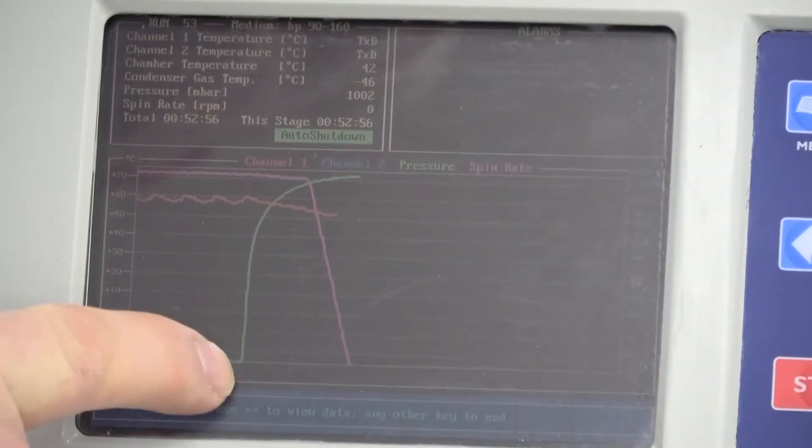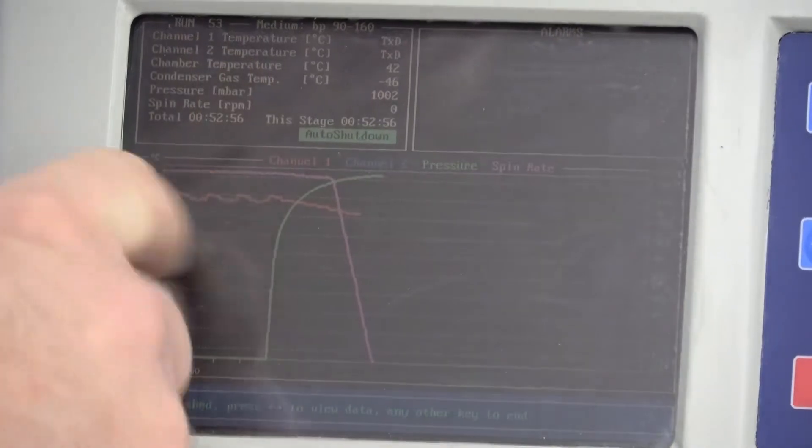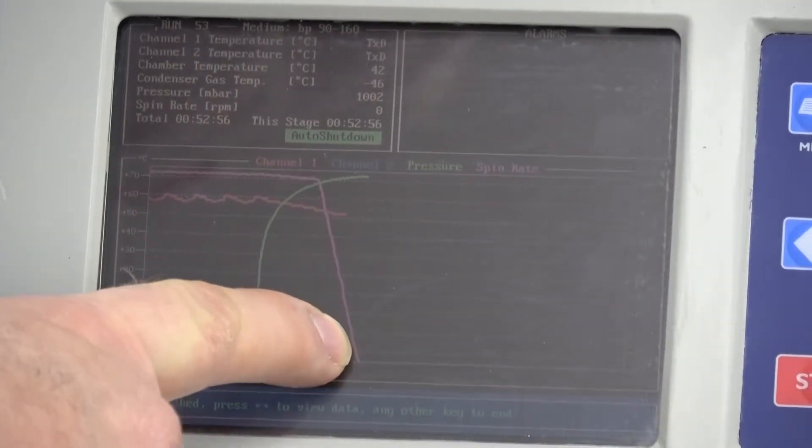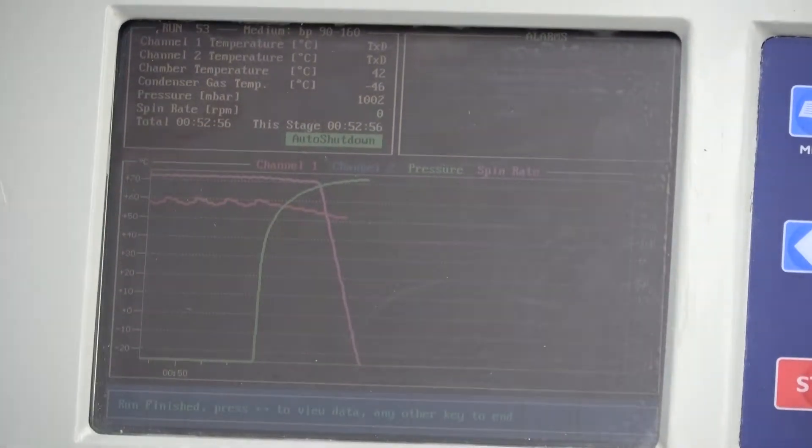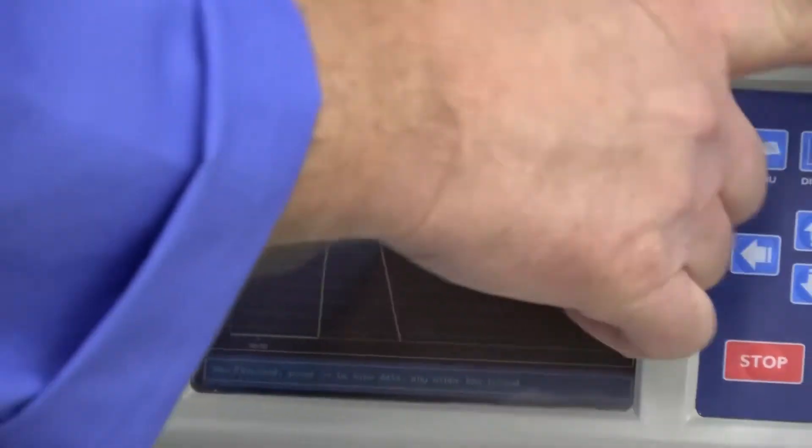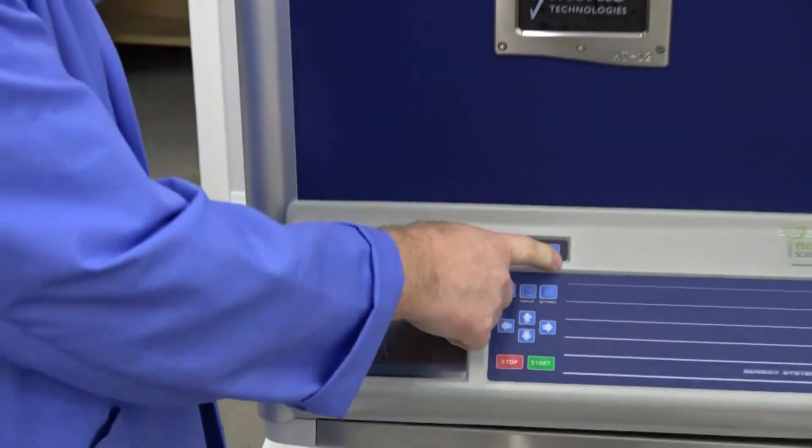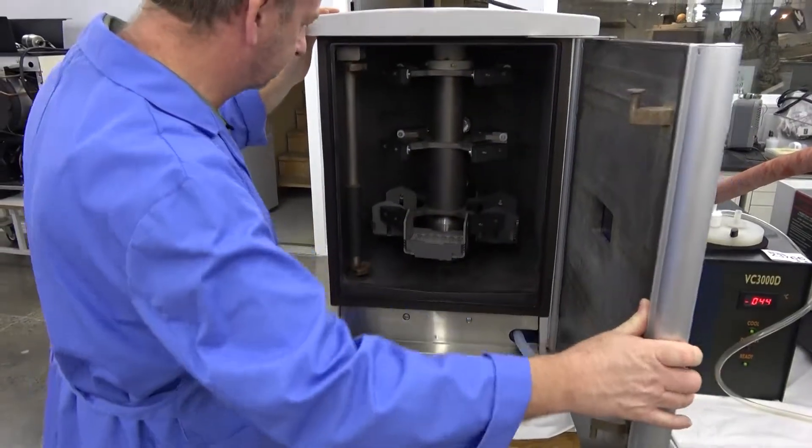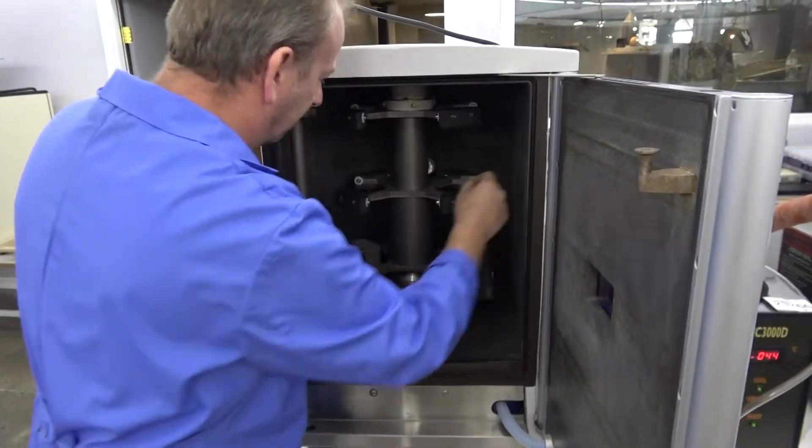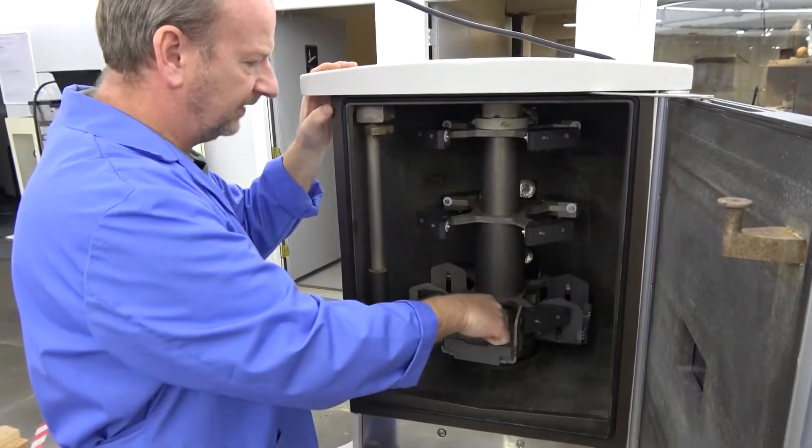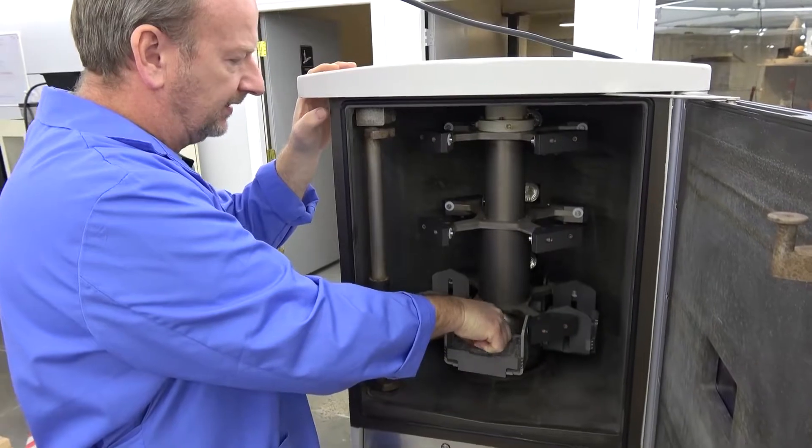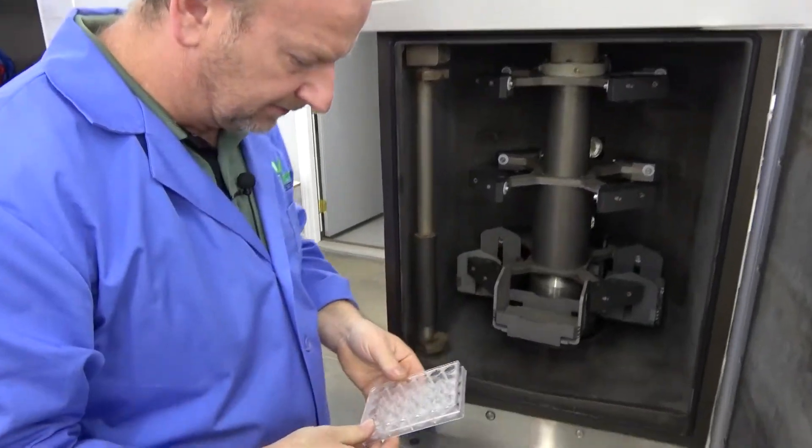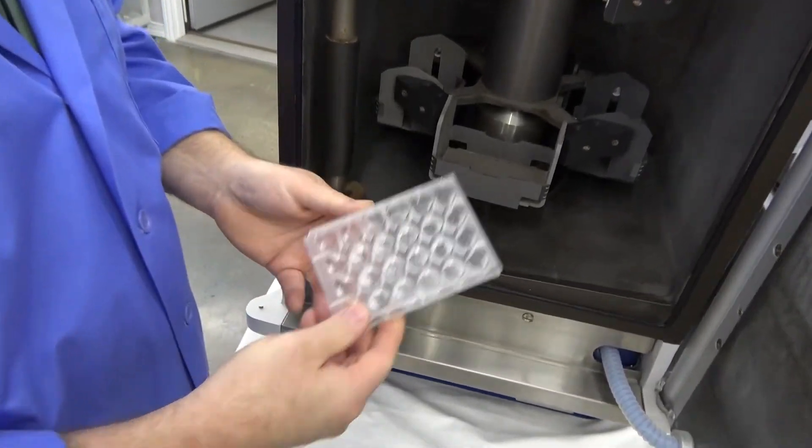But once I shut it down, of course, the vacuum all bled off here, and then the heat also dropped. But anyways, we're going to go ahead and open this up and take a look inside. It's really nice and warm in here because I ran the temperatures fairly high. But as you can see, we don't have anything left, some powder residue.